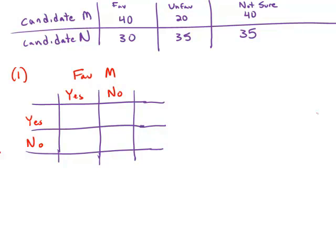And from the top, we know from these numbers at the very top, we know that 40 people were favorable to M, which means 60 weren't out of the total of 100. 30 were favorable to N, which means 70 weren't.